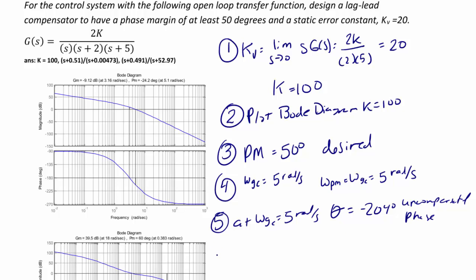So for step six, we're going to calculate our required phase angle phi, which is equal to negative the quantity 180 minus 204 plus 50 plus 5. So our new required phase angle is equal to 79 degrees.